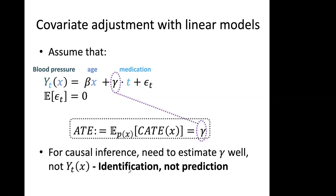If we were lucky enough to know the true model is linear and attempted to fit that same functional form, we get estimated coefficients beta-hat and gamma-hat. All we need to do is look at gamma-hat to conclude something about the average treatment effect — no need to do the complicated procedure of plugging in to estimate CATE. If you have errors in learning gamma-hat, you'll also get wrong estimates of your conditional and average treatment effects.